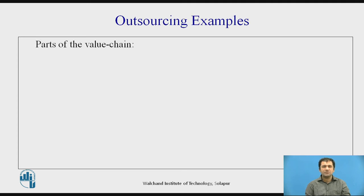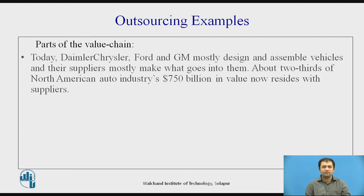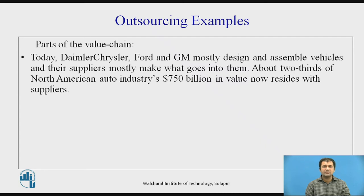Let us see some examples first, then we will discuss outsourcing further. Today the big companies Daimler Chrysler, Ford, and General Motors mostly design and assemble vehicles while their suppliers mostly make what goes into them. It has been observed that about two-thirds of the North American auto industry's $750 billion in value now resides with the suppliers.